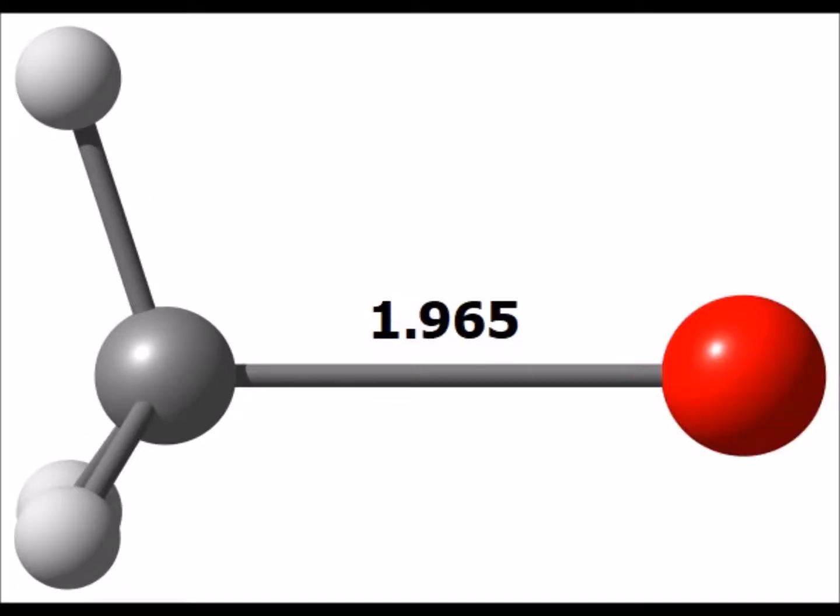Here is bromomethane with the bromine atom shown in red. The carbon-halogen bond is 1.965 angstroms.